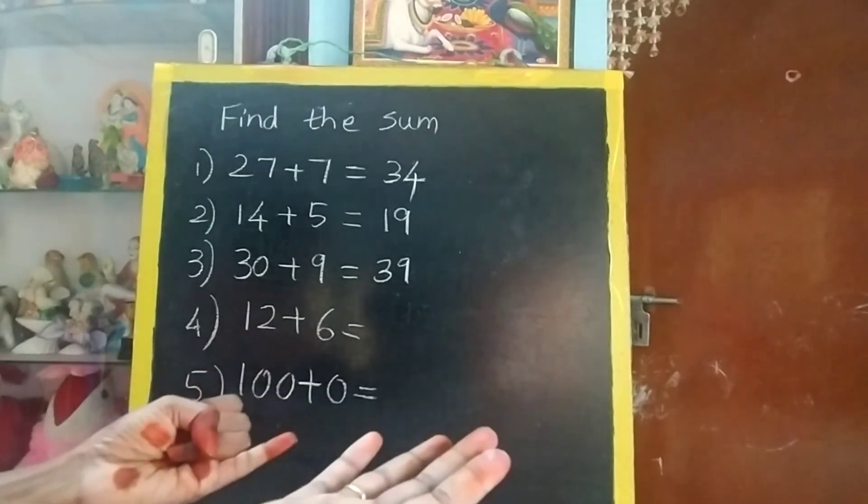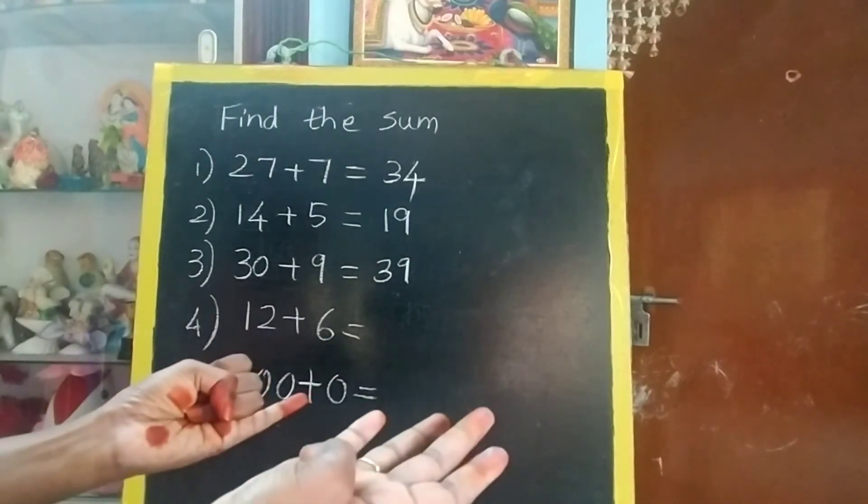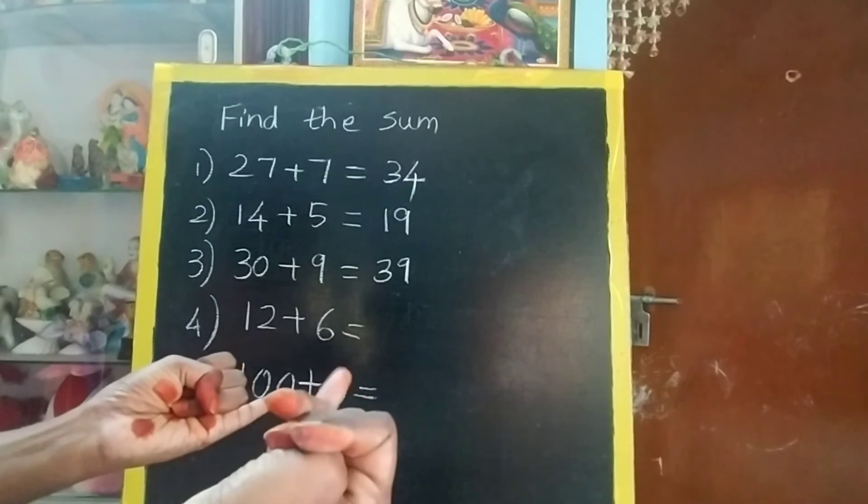Now 12 in the mind, 6 in the finger. After 12, 13, 14, 15, 16, 17, 18.